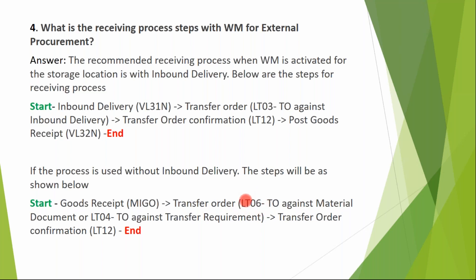Next, we create the transfer order — either against the material document using LT06, or against the transfer requirement using LT04. When we create the transfer order, the system suggests destination storage bins based on the putaway strategies configured. The forklift operator then moves the materials to the suggested bin, and once physically placed, the TO is confirmed with LT12. These are the desktop transactions for the step-by-step receiving process — one with inbound delivery and one without.